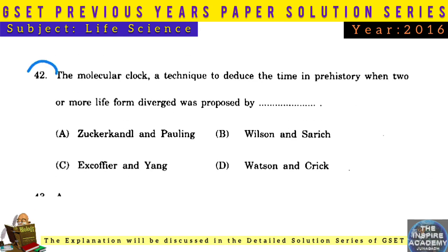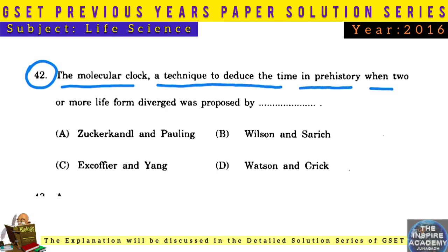Question No. 42: The molecular clock, a technique to deduce the time in prehistory when two or more life forms diverged, was proposed by Zuckerkandl and Pauling.